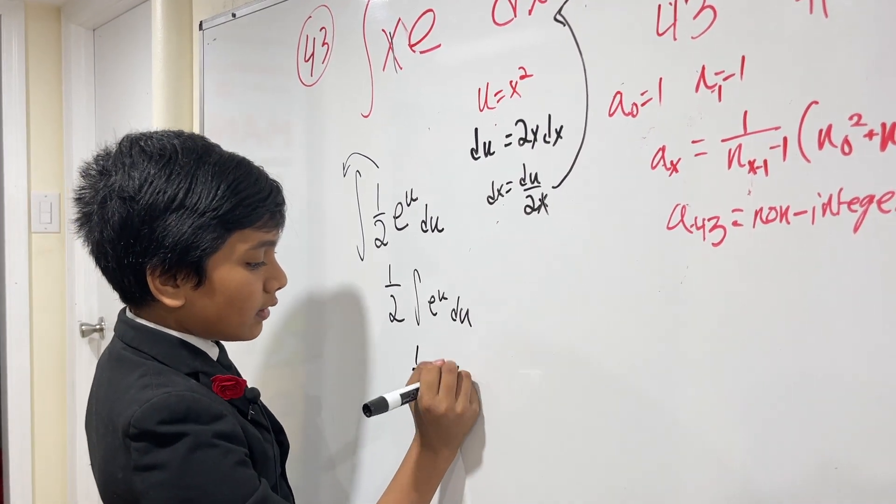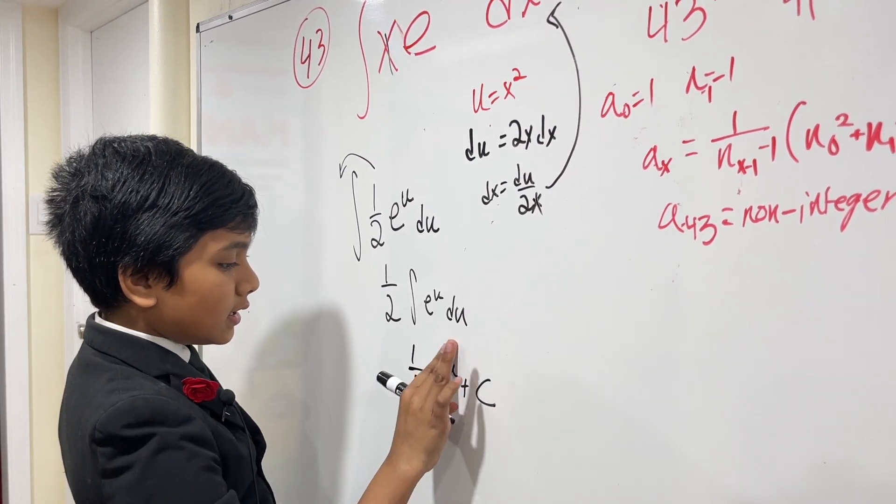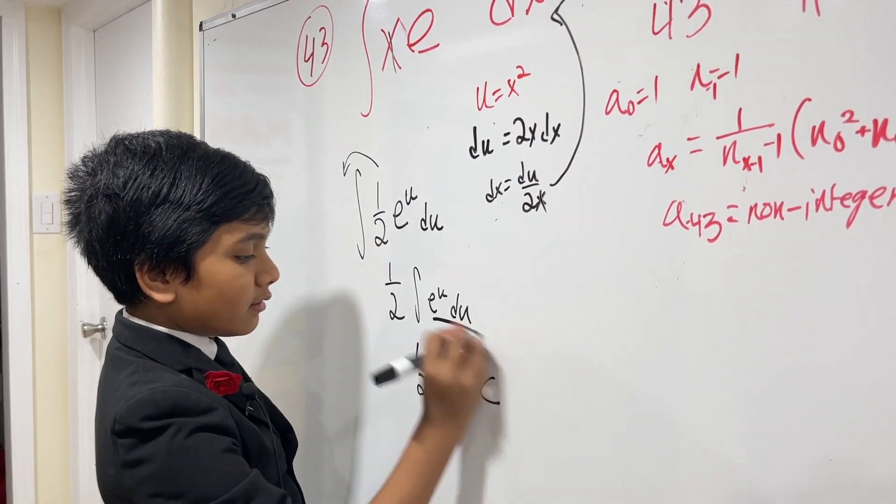So, it just gives you 1 half e to the u plus c, u is x squared. That's it, thank you everybody for watching.